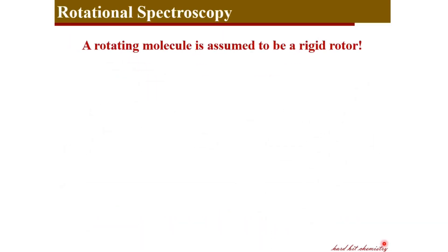A rotating molecule is assumed to be a rigid rotor. The approach of quantum mechanics to study a complicated system is to simplify it by applying certain assumptions, understand the simplified system, and then extrapolate that understanding to the complicated system. That is the modus operandi for quantum mechanics. So let's now look at our rotating molecule as a rigid rotor.